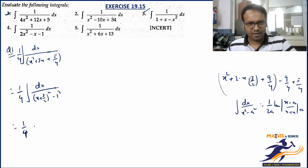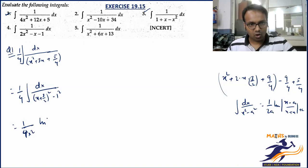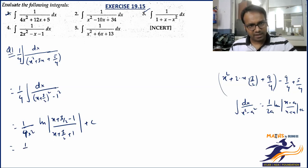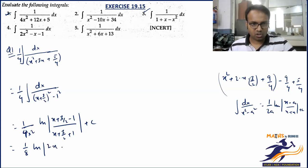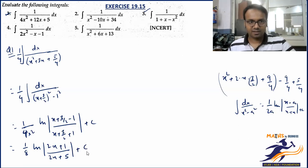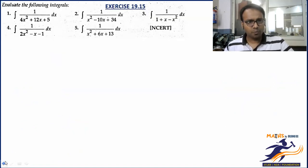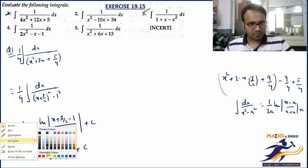In place of x, you have (x + 3/2) — keep that as it is, no tension. So the final answer should be: 1/4 outside, then 1/2 · (1/a) where a = 1, giving 1/8 · log|(x + 3/2 - 1)/(x + 3/2 + 1)|. Simplifying, that is (1/8) · log|(2x + 1)/(2x + 5)| + C. Check once: the answer is 1/8, log of (2x + 1) and (2x + 5). I hope you get it.